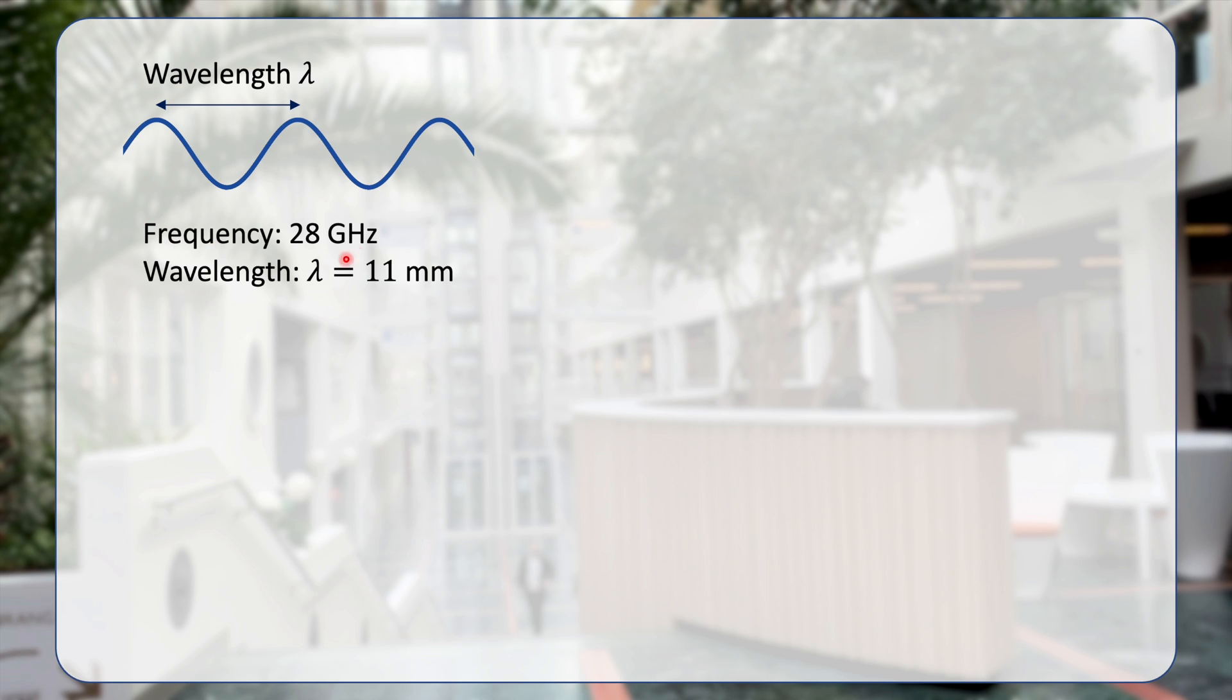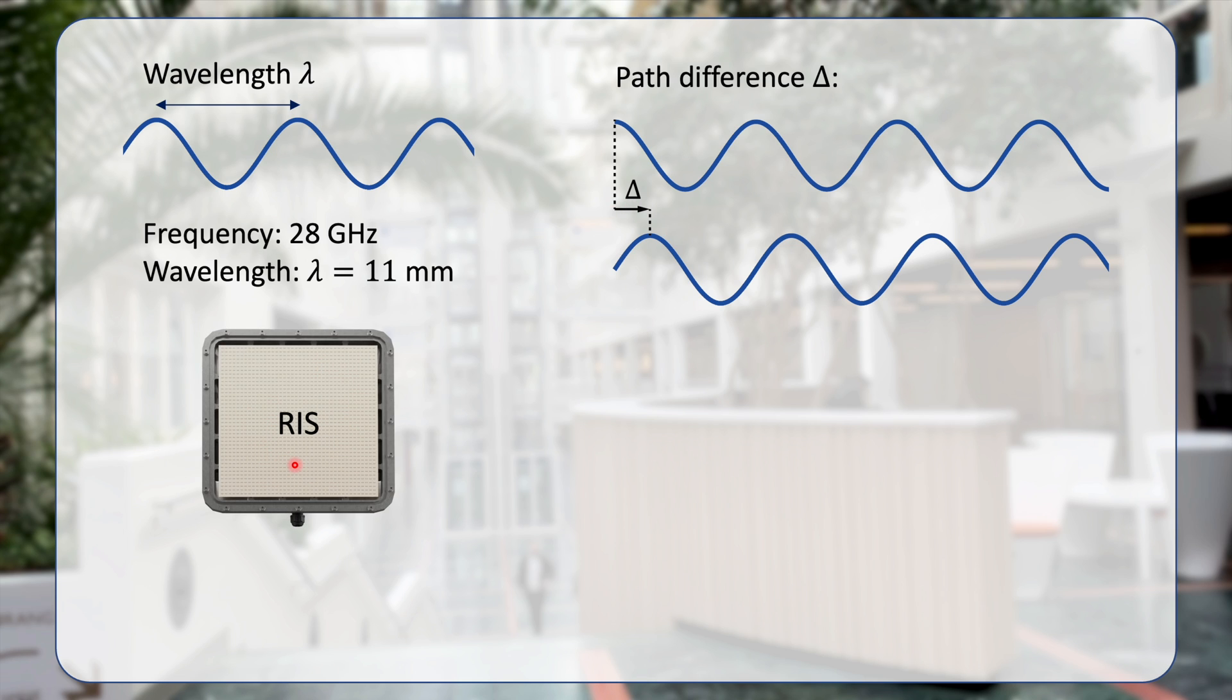A wireless signal at a particular carrier frequency, say 28 GHz, has a wavelength that we can calculate. In this case, it is 11 mm, which is why we are calling it millimeter wave communications when operating at these frequencies. The wavelength is actually the physical distance between two peaks of the wireless signals when it propagates. When the waves have to propagate at different distances, in particular having a path difference of delta, the signal that is reaching the user device will be shifted back and forth like this. We will have this delta difference.